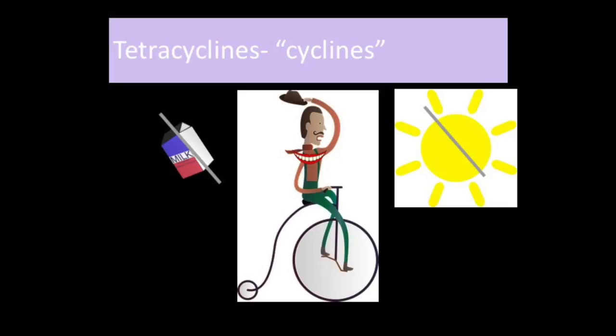Tetracyclines prevent protein synthesis and are effective against gram-negative and gram-positive bacteria, such as gonorrhea, chlamydia, and UTIs. These antibiotics were commonly used in the 1950s and 60s, but many bacteria are now resistant to them. Tetracyclines can cause permanent staining of teeth in children or a developing fetus, so they are not used in children or pregnant women. They also cause photosensitivity—sensitivity to UV rays from the sun—which can cause redness that looks like a sunburn. Other side effects are fever and joint pain. Patients should not drink milk or take dairy or calcium with these medications, as they can reduce the drug's absorption by up to 50%. Tetracyclines end in '-cycline'; examples are tetracycline and doxycycline.